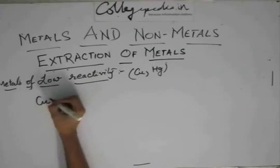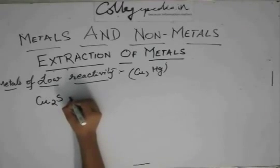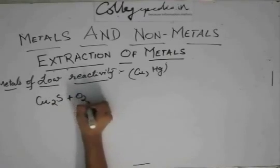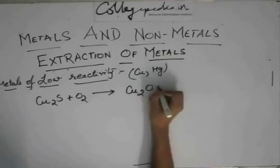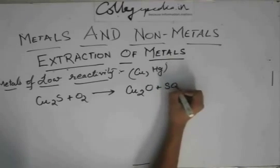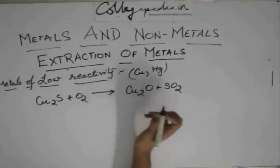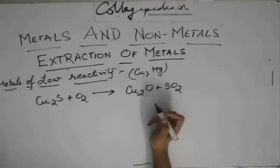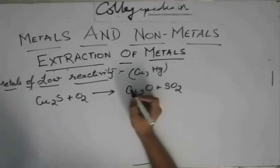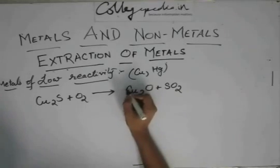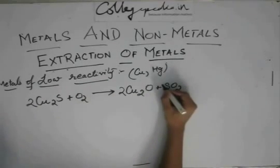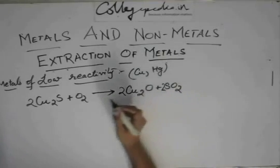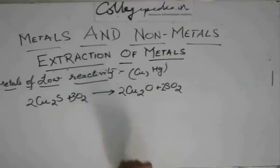Similarly for Cu2S, this is slightly different. This is heated to give Cu2O plus SO2. We balance it. 2Cu2S + 3O2 heat gives 2Cu2O + 2SO2. Now it is balanced.